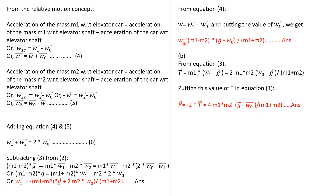The second answer is for W — the acceleration of mass M1 with respect to the car. We use equation number 4: W equals W1 minus W0. Substituting the value of W1 we found, we get the expression for W. This is your second answer.